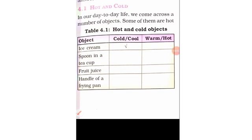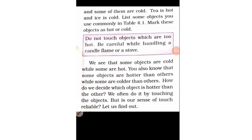What do we understand by hot and cold? In our day-to-day life, we come across a number of objects. Some of them are hot and some of them are cold. For example, tea is hot and ice is cold. You have to mention whether objects are cold or warm — like, is an ice cream cold or warm? Is a spoon in a tea cup cold? You have to list these in Activity 4.1.